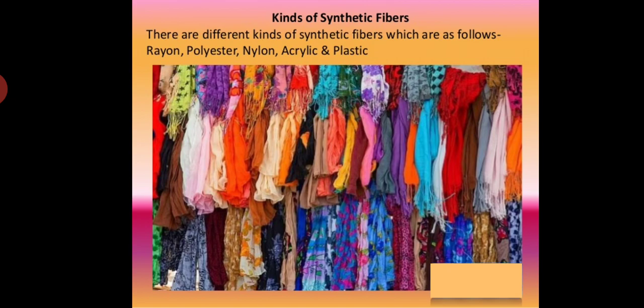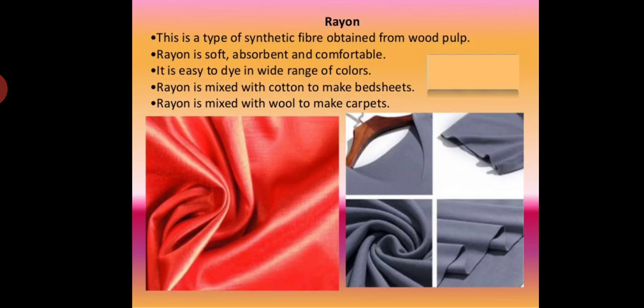There are different kinds of synthetic fibers: rayon, polyester, nylon, acrylic, and plastic. First, rayon — this is a type of synthetic fiber obtained from wood pulp. It is quite soft, absorbent, and comfortable. It can be dyed in different colors very easily. Rayon is always used by mixing it with cotton to make fabrics.